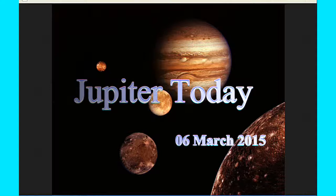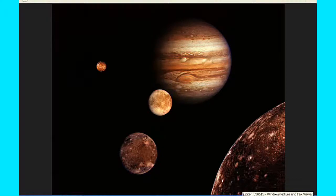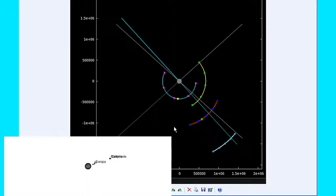This is Jupiter Today for the 6th of March 2015. Jupiter Today is a daily podcast focusing attention on the dynamic Jupiter system for the purpose of monitoring activity. At zero hours UTC, Io begins the day in quadrant 3 heading west.